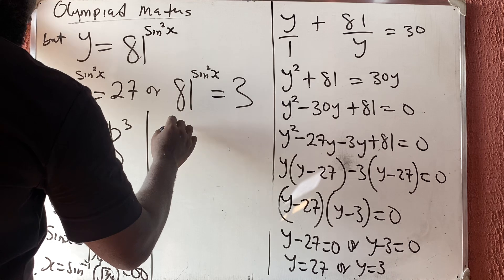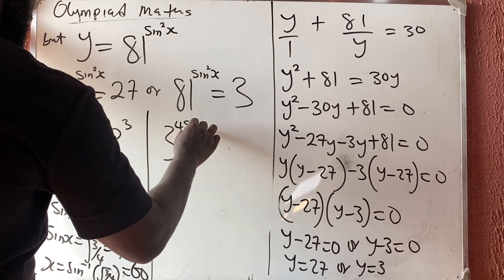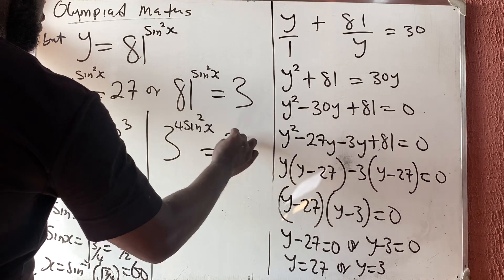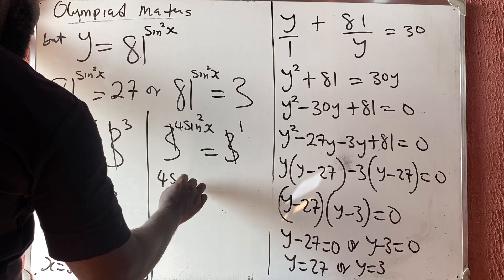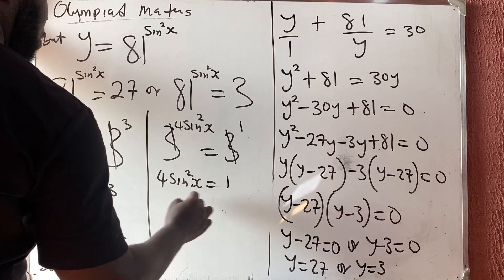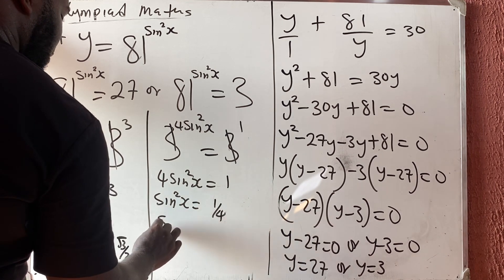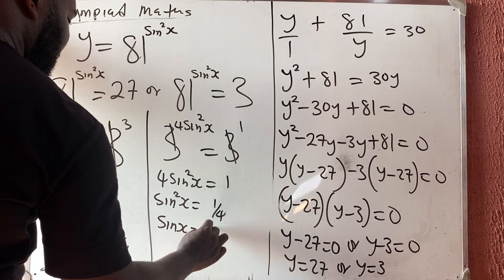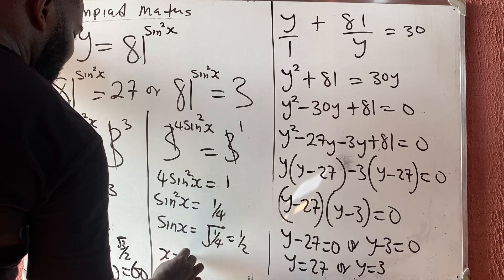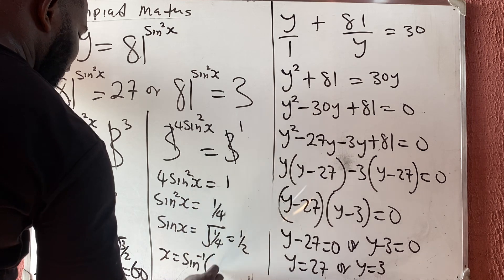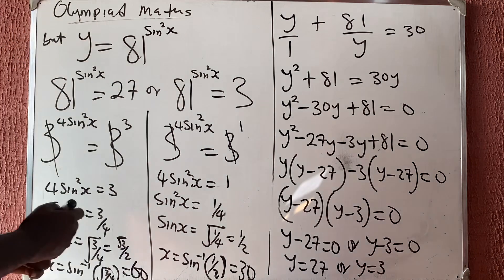For the second case: 81 raised to power sine squared x equals 3, so 3 raised to power 4 sine squared x equals 3 raised to power 1. Therefore 4 sine squared x equals 1, so sine squared x equals 1 over 4. Sine x equals the square root of 1 over 4, which is 1 over 2. So x equals sine inverse of 1 over 2, which is 30 degrees.